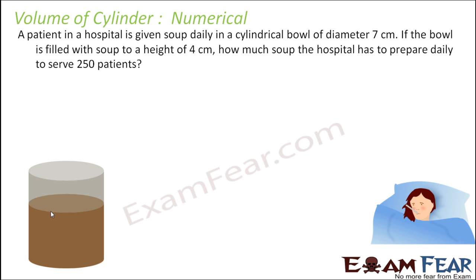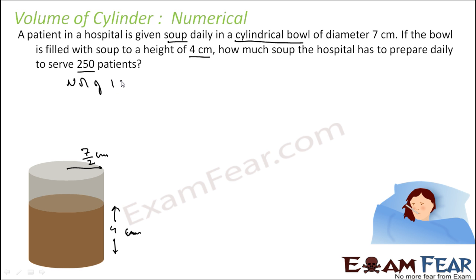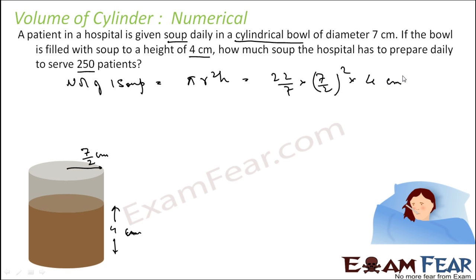A patient in hospital is given soup daily in a cylindrical bowl of diameter 7 centimeter, so radius 3.5 centimeter, filled to a height of 4 centimeter. Volume of one bowl of soup = π r² h = 22/7 × (7/2)² × 4 = 154 centimeter cube.